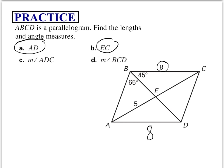For EC, we know that if it's a parallelogram, diagonals bisect each other. So if AE is 5, then EC is 5 as well.